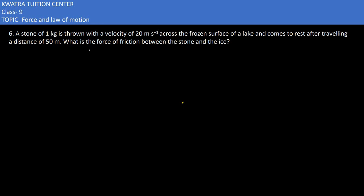In the sixth one we have a stone of 1 kg thrown with a velocity of 20 meters per second. So the mass is 1 kg, and they are saying they have thrown it with a velocity of 20 meters per second. That would be your u.